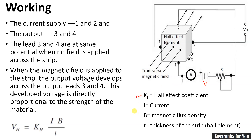Here K_H is the Hall Effect coefficient, I is the current, B is the magnetic flux density, and t is the thickness of the strip — note it is the thickness of the Hall element, not time.